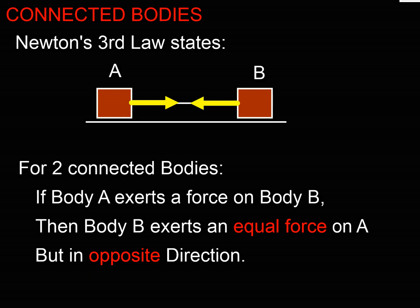Here we have two separate bodies, A and B, connected by a rope which has a tension in it. If body A is exerting a force on body B — pulling body B to the left — then body B exerts an equal and opposite force on body A, pulling it to the right. These pairs of equal and opposite forces appear everywhere: if you lean on a wall, the wall pushes back; if you stand on the floor, the floor pushes up on your feet.